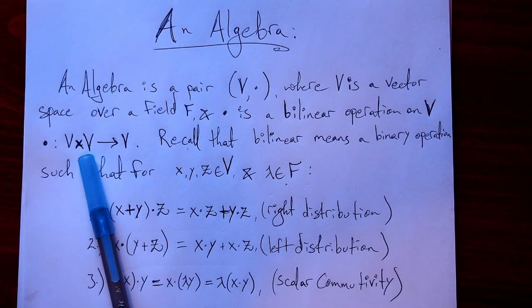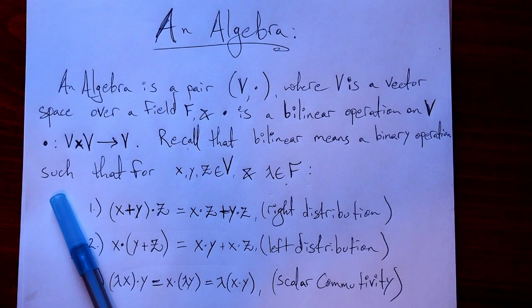Recall that bilinear means a binary operation such that for x, y, z in our vector space and lambda in our field, we have right distributivity, left distributivity, and scalar commutativity.